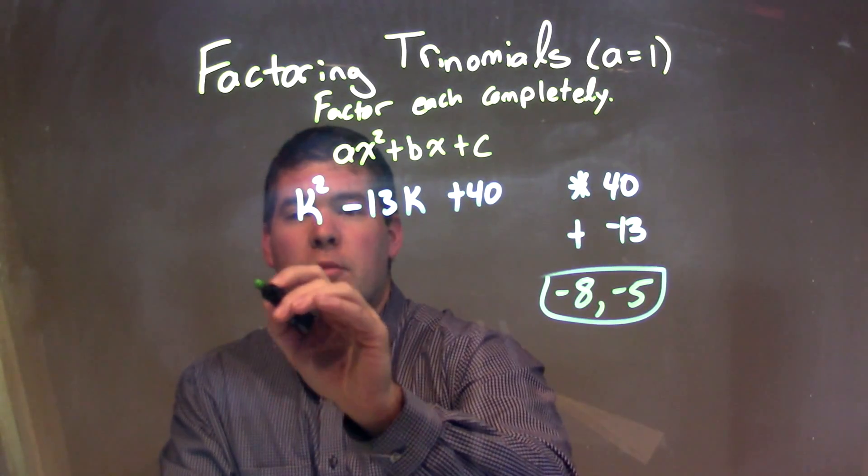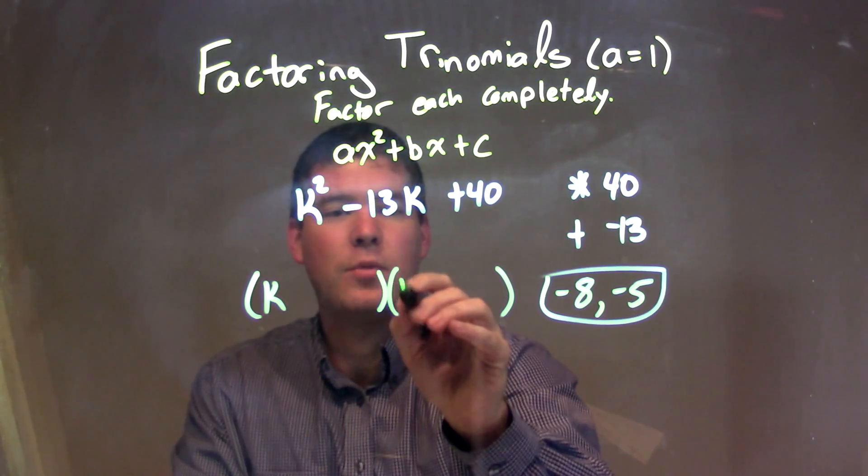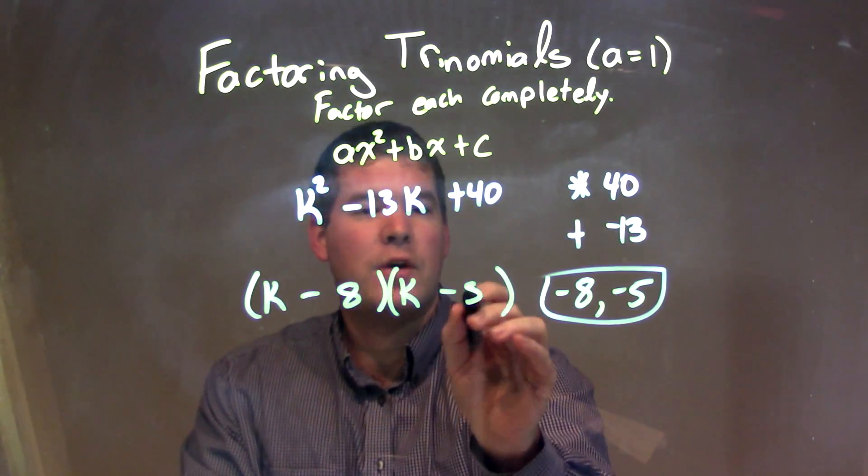So since we have those two numbers, we can factor this out into our two parentheses, putting k first in each one, and we just write the two numbers: k minus 8 and k minus 5.